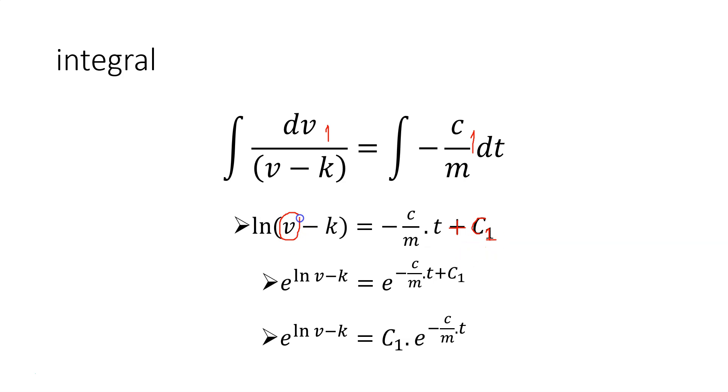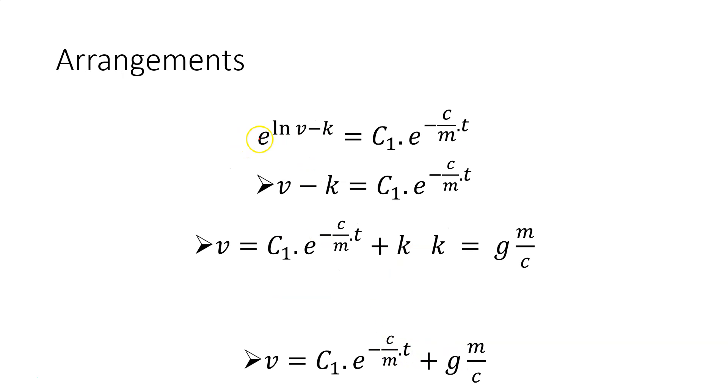Now, I want v alone. Therefore, what we can do is take the exponential of both sides. I take the exponential of both sides. At the right side, there is a summation here. This is a mathematical rule - I can take it here as a constant C_1. We can continue at the left side, e and ln, we can omit that, and we have v minus k. The right side, we have C_1 times e^(-c/m*t).